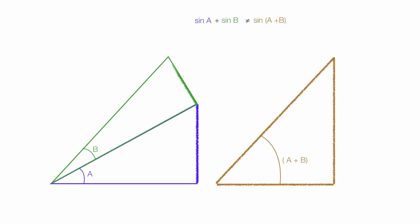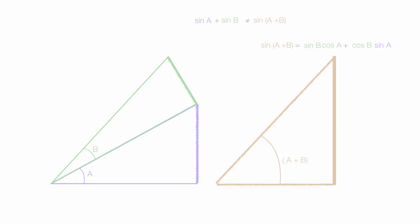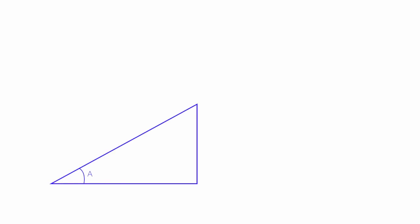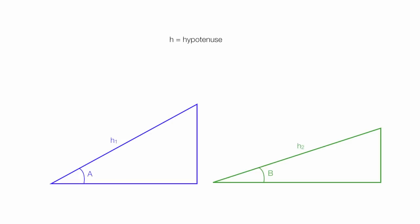I'll be using some animation to show you that sine a plus sine b is not equal to the sine of a plus b — that that blue plus that green is not equal to that big brown line right there. So imagine I have two triangles: a blue triangle with an angle of a and a green triangle with an angle of b. The hypotenuse of the blue triangle is h1, and the hypotenuse of the green triangle is h2.